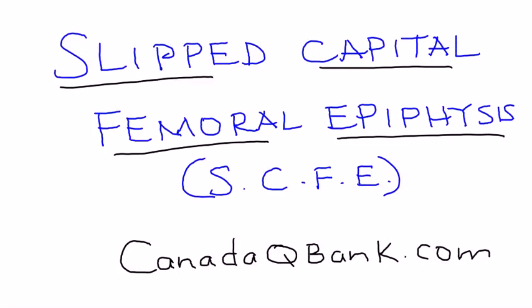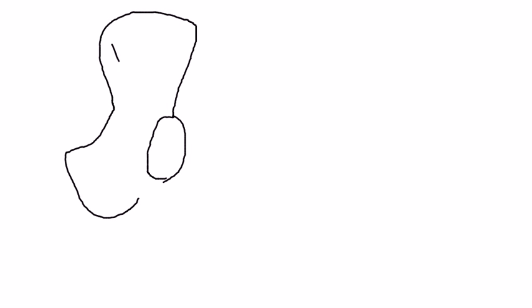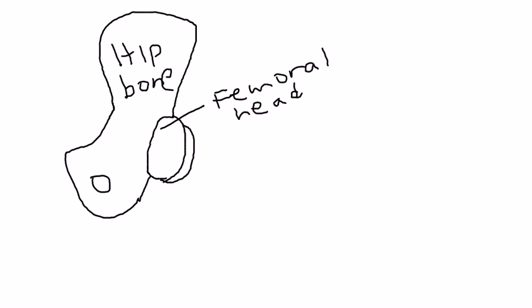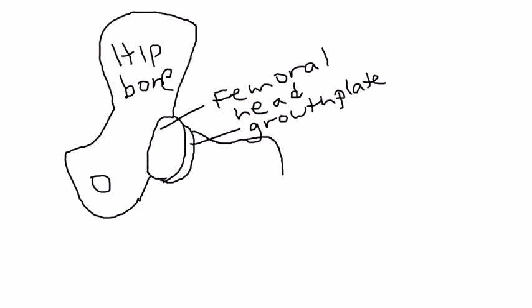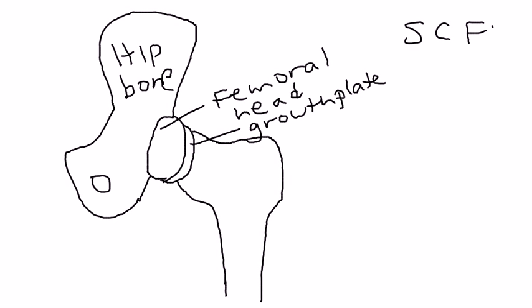Slipped Capital Femoral Epiphysis is the topic. Basically, it involves the femur. The hip bone has the femur attached to it, and this is the femoral head. Right below it is the growth plate, and then you have the femur itself — the big bone. Slipped Capital Femoral Epiphysis involves the movement of the femoral neck upward and forward.